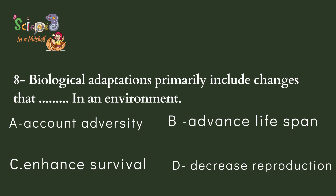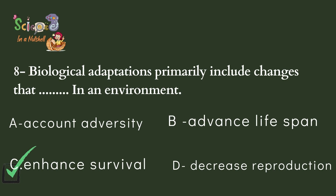Question number eight: Biological adaptation primarily includes changes that will do what in an environment? Biological means related to living organisms. Living organism adaptation will help them to have a survival chance in an environment. So the answer is C — enhanced survival. Enhanced means to make it better — better chances for survival because they are doing adaptation.